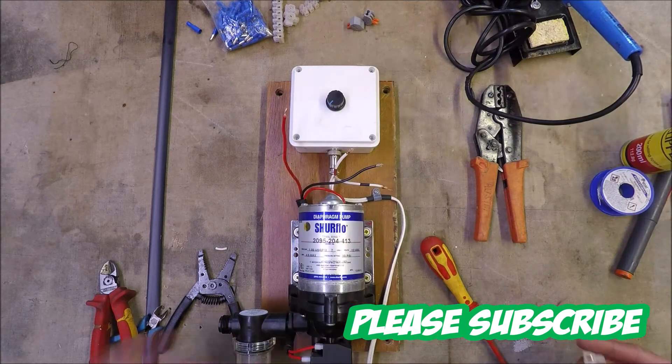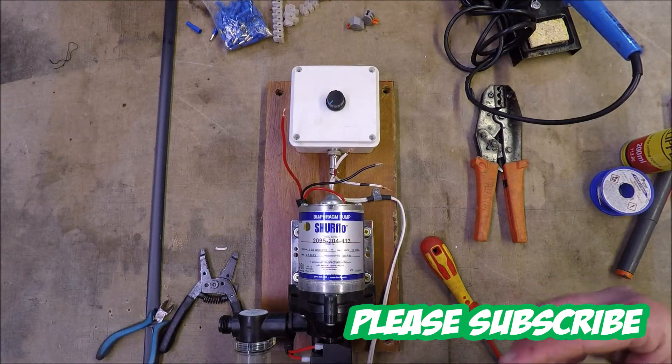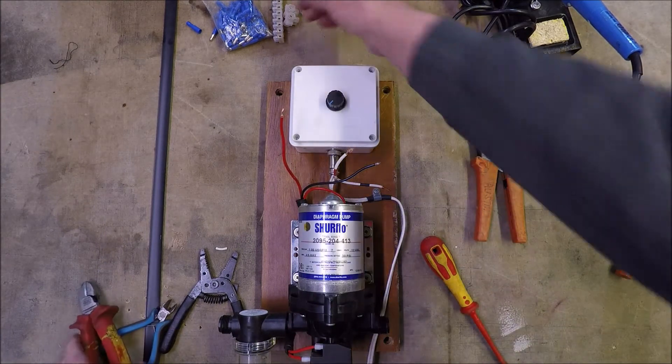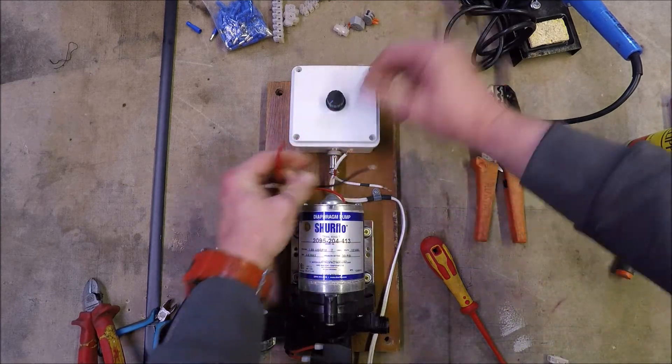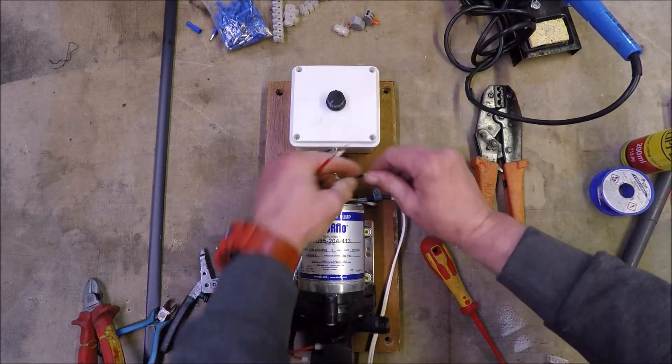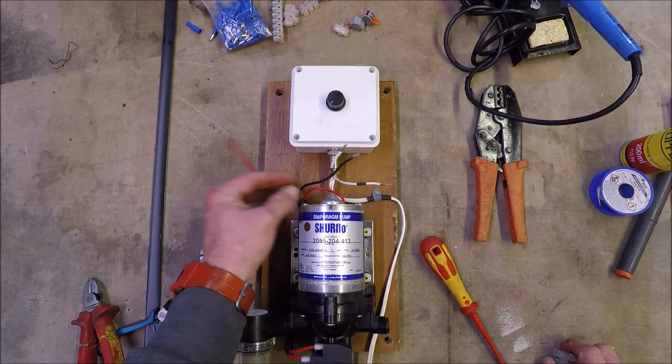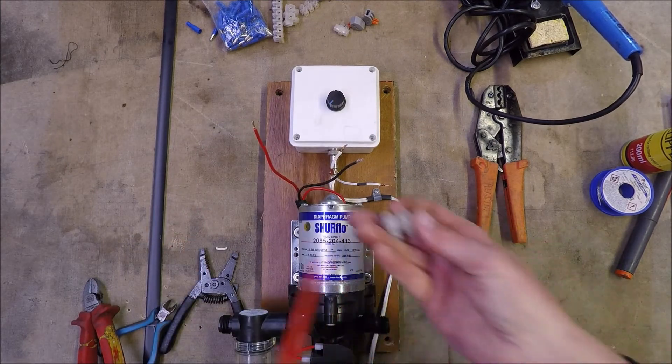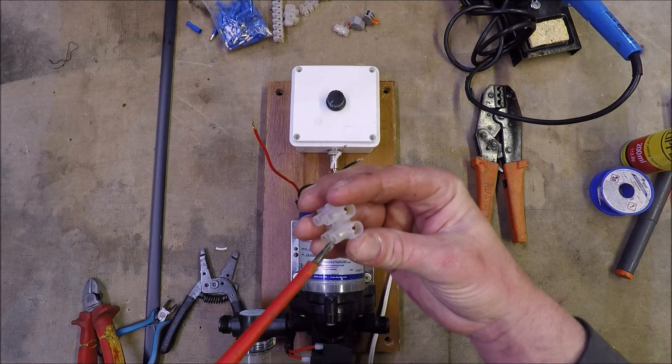Next we're going to use our chocky block or terminal block connectors. We have four wires - two wires from the pump, two wires from the controller. So I've cut off and selected that I want two blocks.